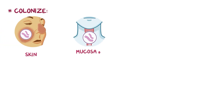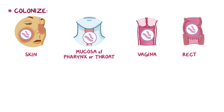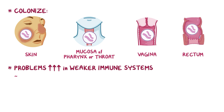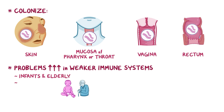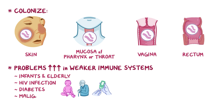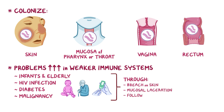Despite all that powerful arsenal, strep pyogenes can actually peacefully colonize the skin, the mucosa of the pharynx or throat, the vagina, and the rectum. It doesn't do any harm so long as the immune system keeps them in check. Problems arise in individuals with weaker immune systems, like infants and the elderly, or those with HIV infection, diabetes, or a malignancy. In these cases, strep pyogenes usually gets into the bloodstream through a breach in the skin, a mucosal laceration, or following surgery.